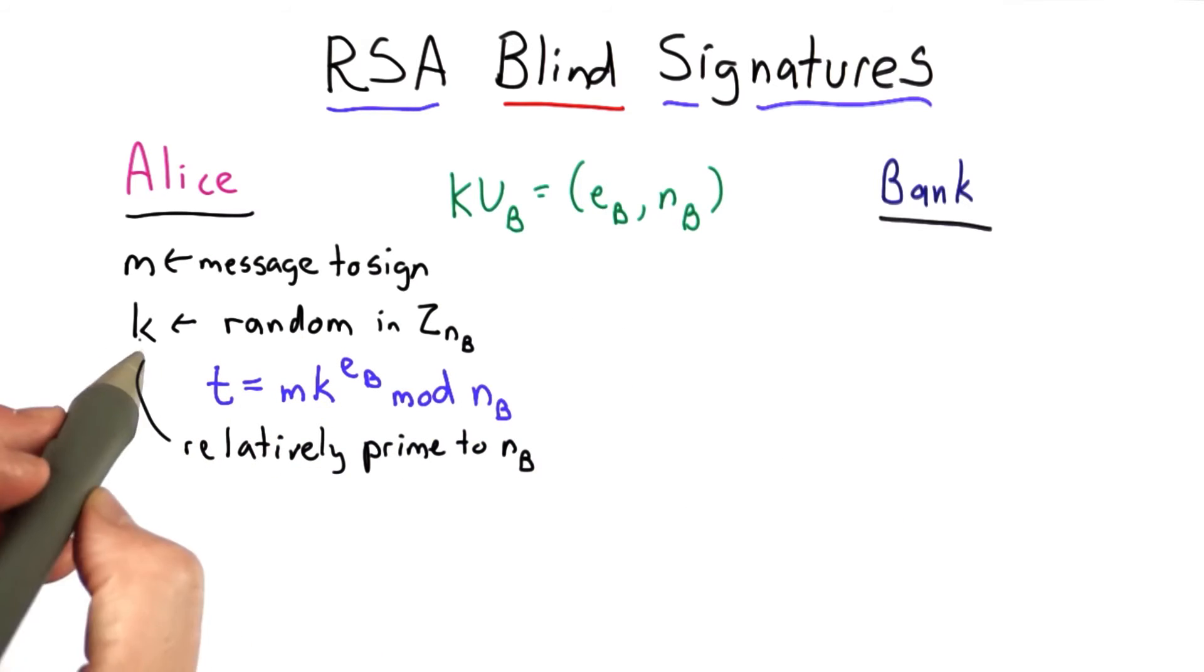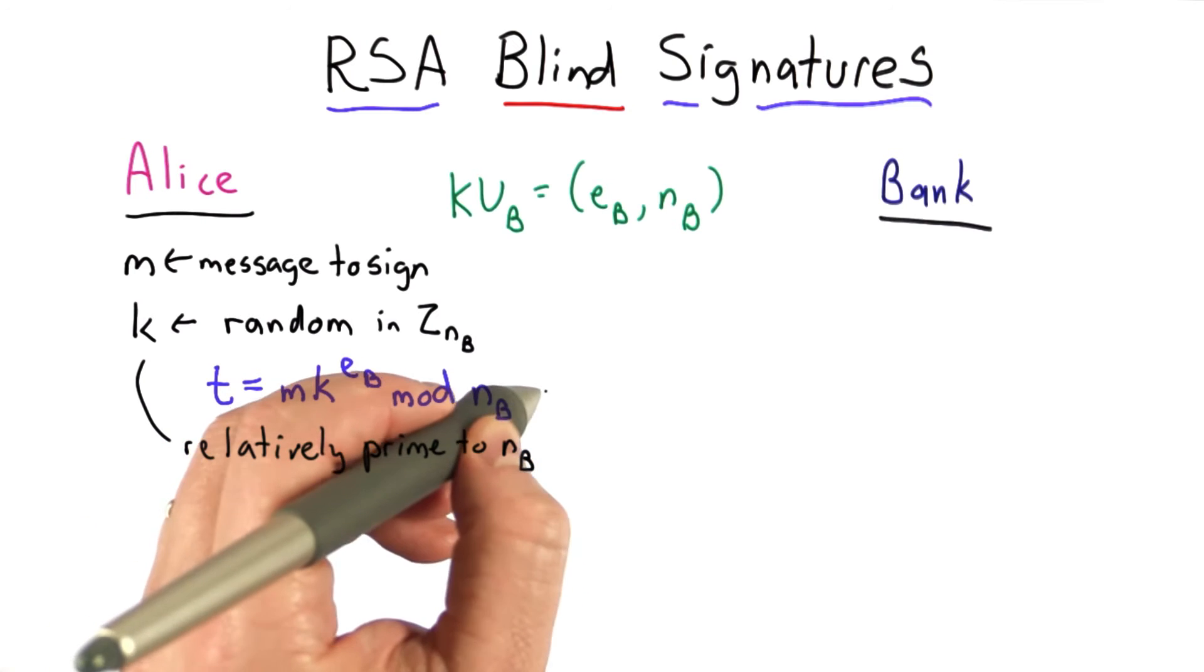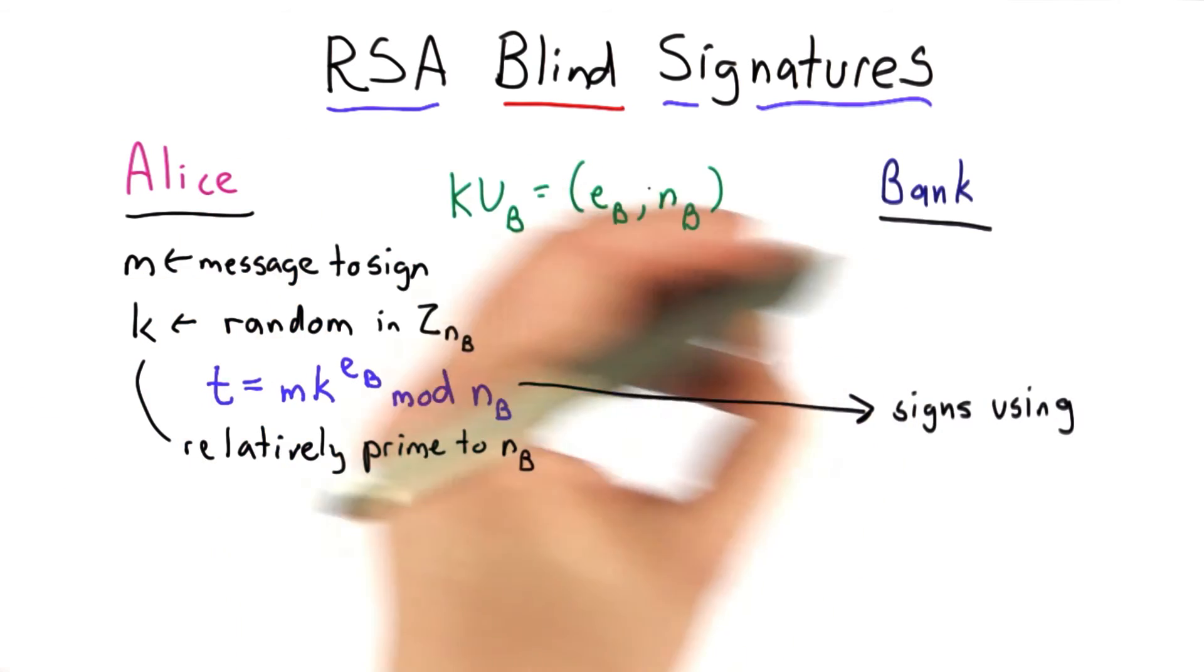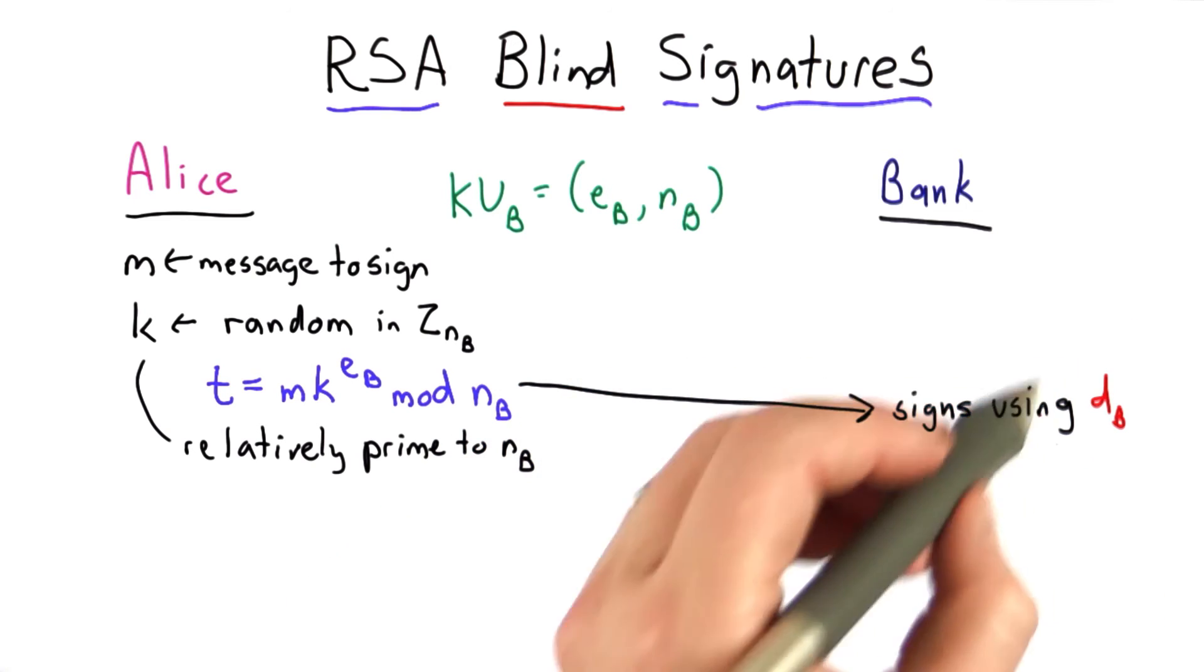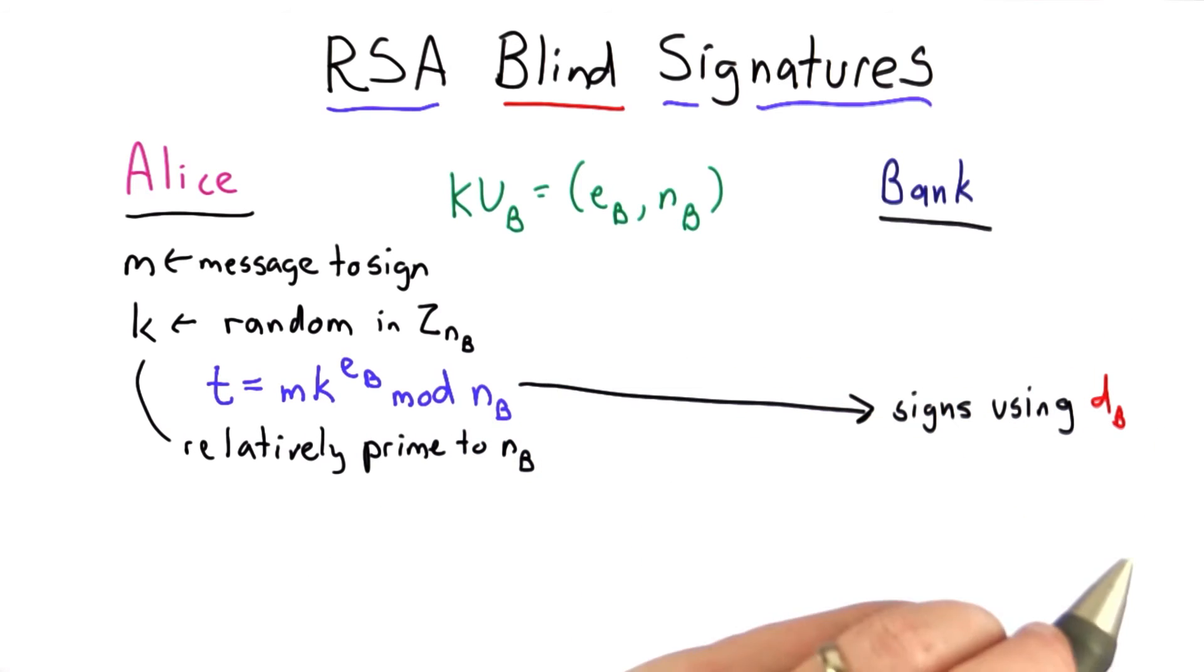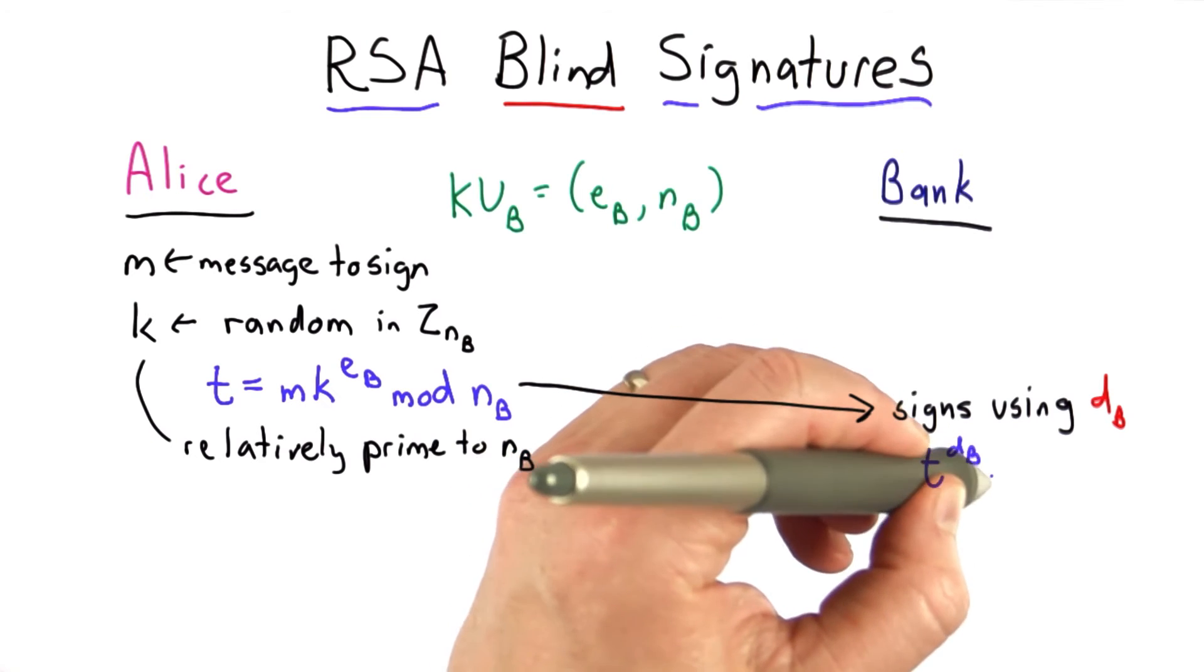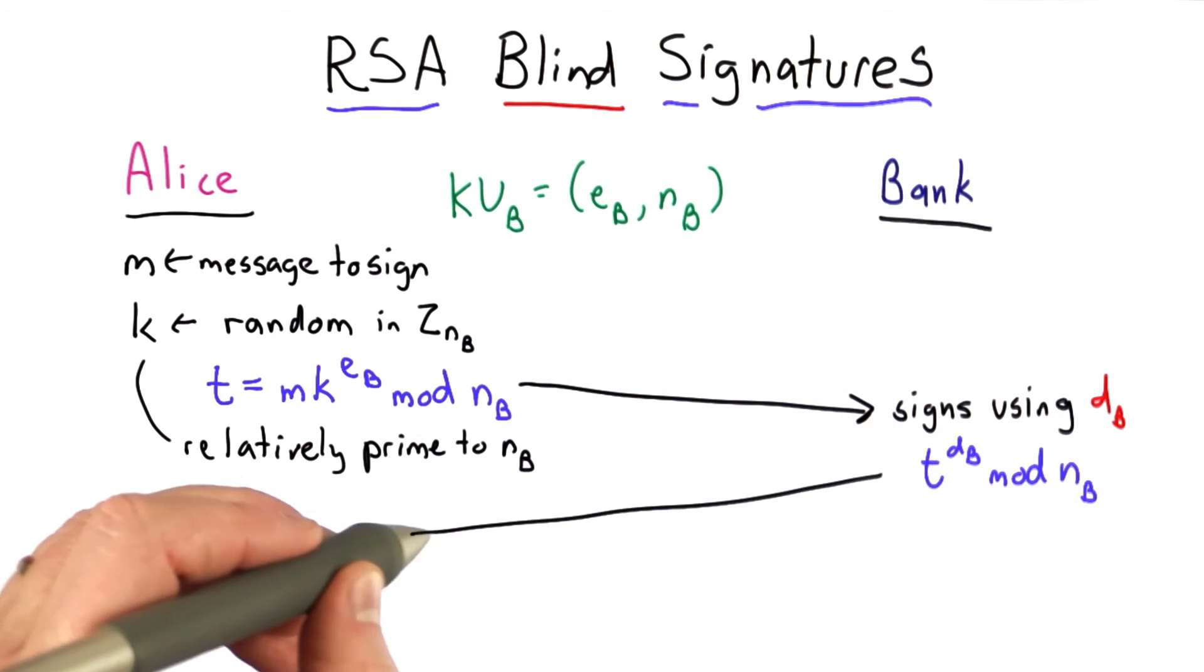This doesn't reveal to the bank the value of m, so we can safely send that to the bank without leaking any information, and the bank will sign that message using its private key, its private exponent db. That produces the value t to the db power mod n, which the bank sends back to Alice.